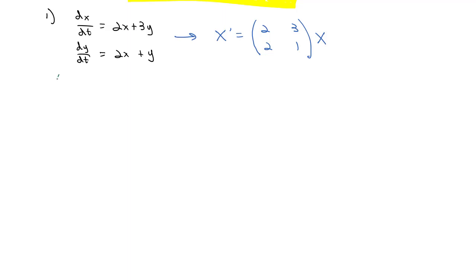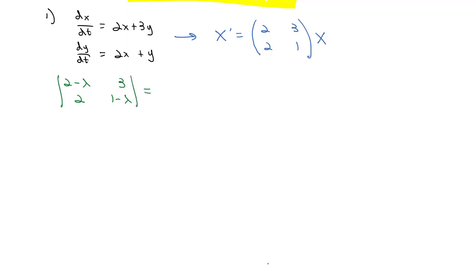To find eigenvalues, we subtract lambda down the diagonal: the matrix becomes [2−λ, 3; 2, 1−λ], and we set that determinant equal to 0. For the determinant, we multiply the diagonals to get (2−λ)(1−λ) minus the other diagonal, which is 6, and that must equal 0.